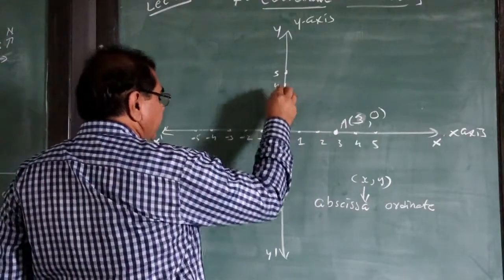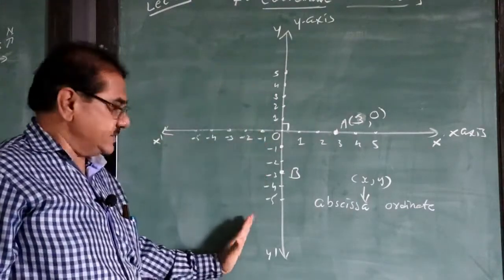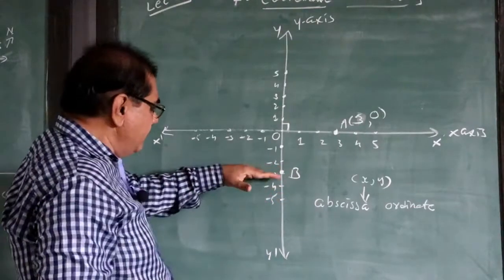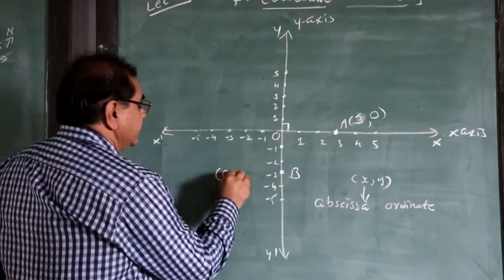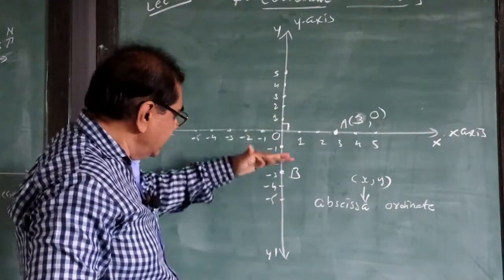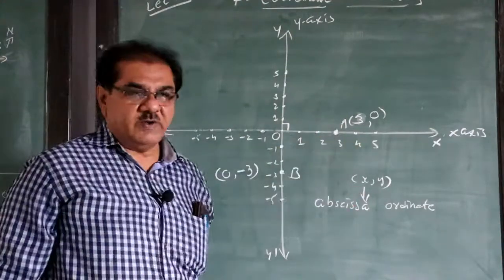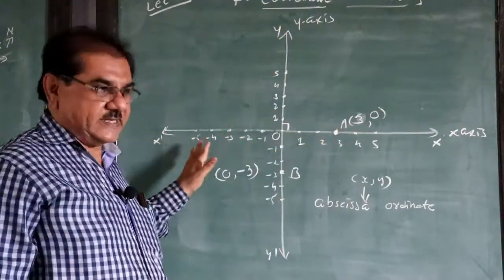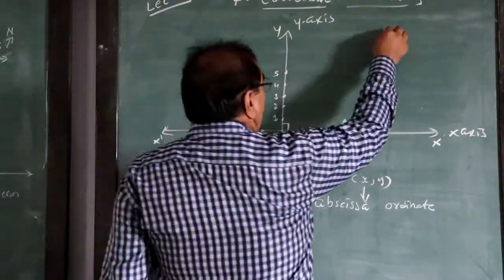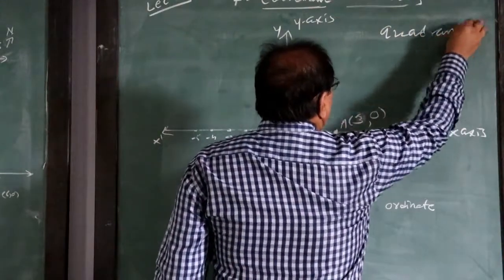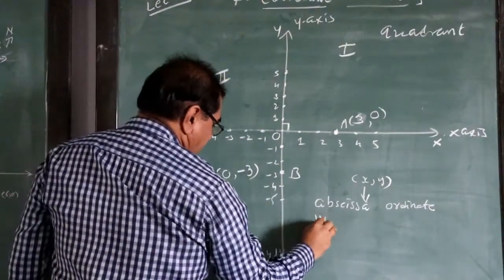Similarly, suppose point B is lying at minus 3 on the y-axis. How much away is point B from the y-axis? It is already on the y-axis, so its abscissa is 0. How much is it away from the x-axis? It is 1, 2, 3 units away but on the negative side, so its ordinate is minus 3. This is how we locate a point. By drawing the coordinate axes, the plane or graph paper is divided into 4 parts — each part is known as a quadrant: quadrant 1, quadrant 2, quadrant 3, and quadrant 4, moving anticlockwise.